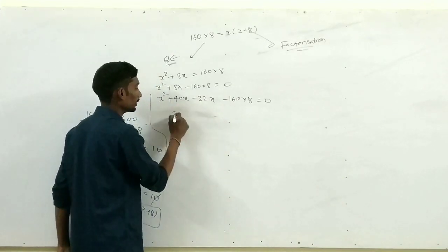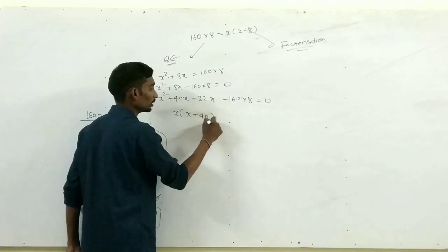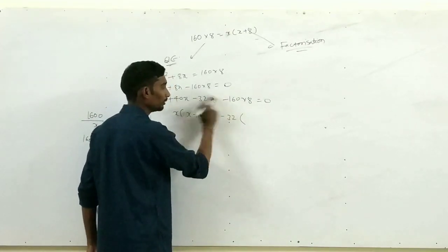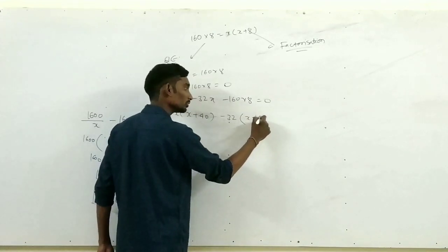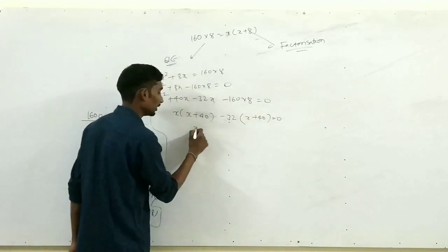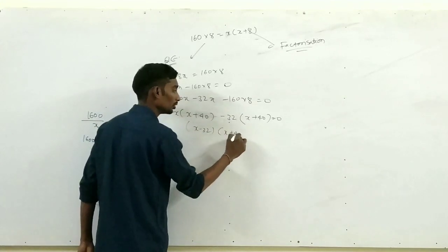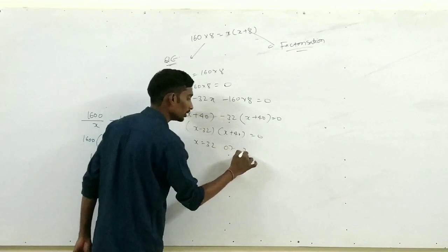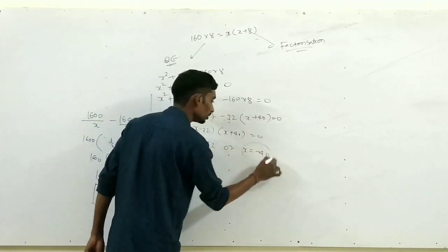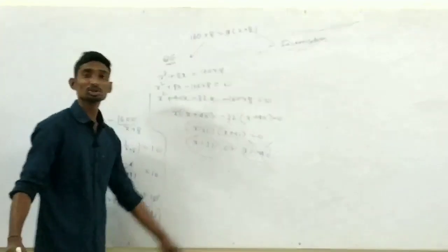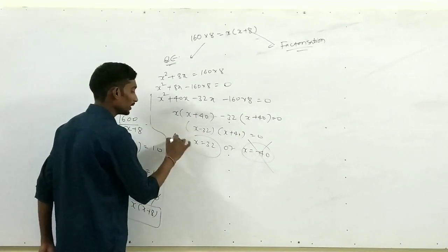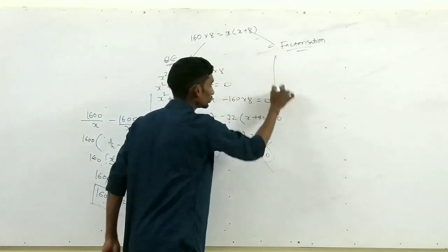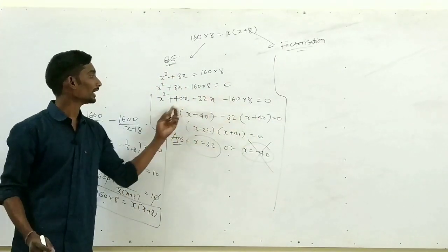x(x+40) − 32(x+40) = 0, इसलिए (x−32)(x+40) = 0। तो x = 32 या x = −40। Number of books कभी negative नहीं हो सकते, इसलिए answer है x = 32।